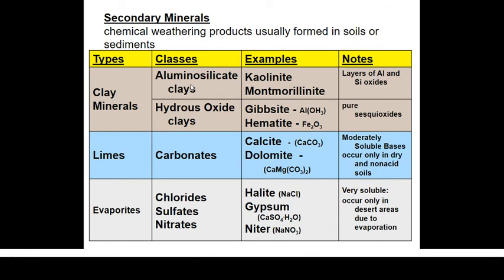In hematite and gibbsite — also called sesquioxides — the aluminum silicates are considered layers of aluminum and silicon oxides with a distinct ordered arrangement. In contrast, pure sesquioxides have no arrangement of aluminum and silicon in their structure. Another example of secondary minerals is limes, including carbonates: calcium carbonate, calcite or calcitic limestone, and dolomite. Also magnesium hydroxide, calcium hydroxide, and calcium oxide. Limes are moderately basic — they are not acidic, and they can be dissolved in water or in slightly acidic solutions.